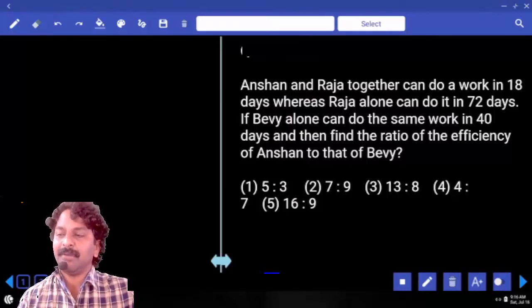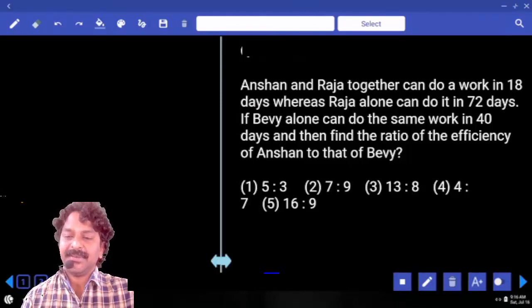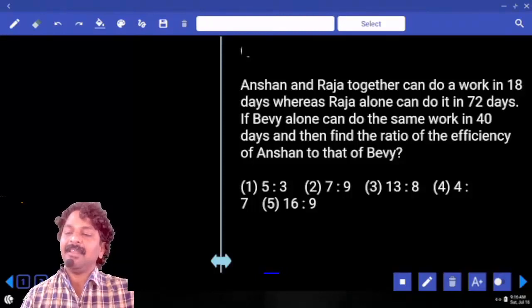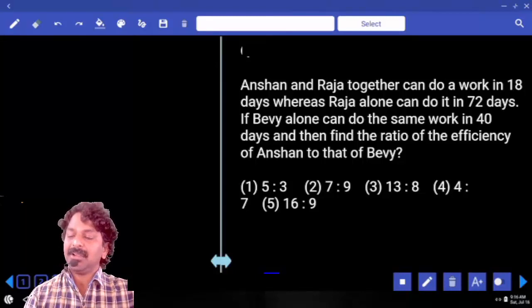Anshan and Raja together can do a work in 18 days, whereas Raja alone can do the work in 72 days. If Bevy alone can do the same work in 40 days, find the ratio of the efficiencies of Anshan to that of Bevy.